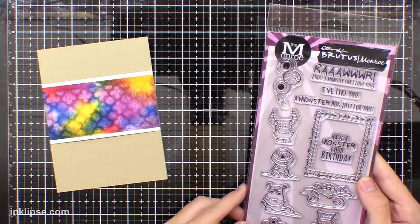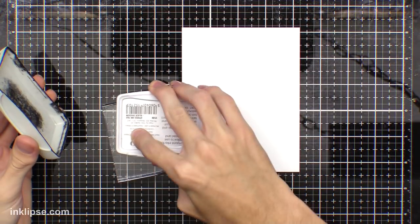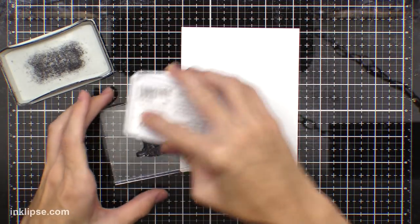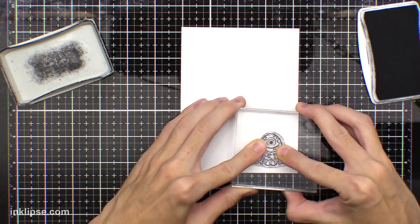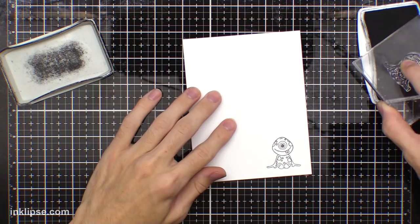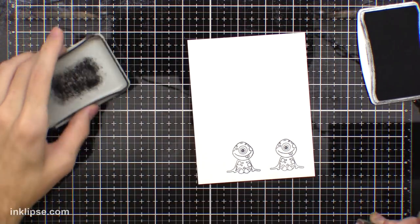Now I'm using this Brutus Monroe monster stamp set. I love this and I was looking for the perfect card and this one seemed to be it. It was just super bright so I couldn't resist these fun little monsters. So I'm stamping down this one little monster here in Nuvo hybrid black ink and I'll stamp it twice just in case I make a mistake with my coloring and want to restart it.